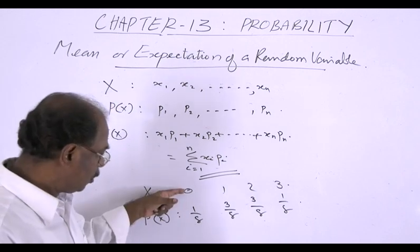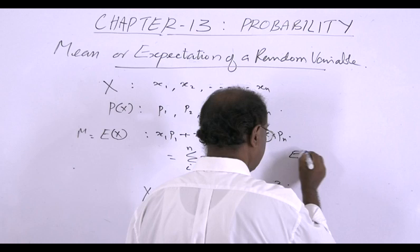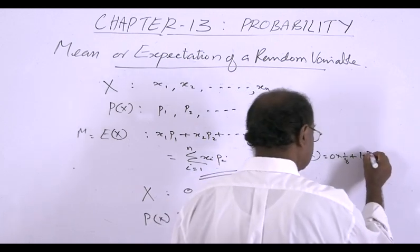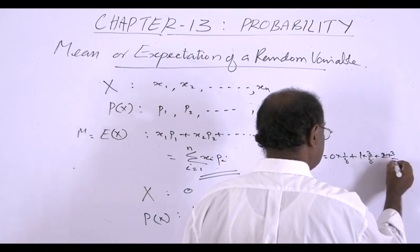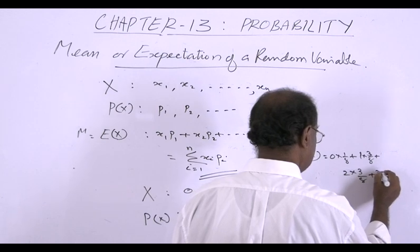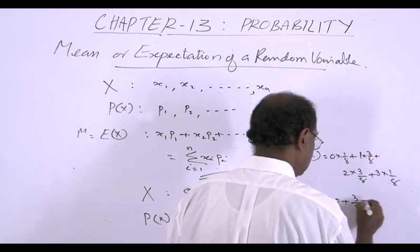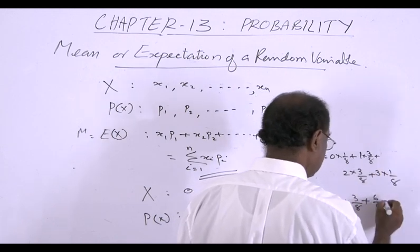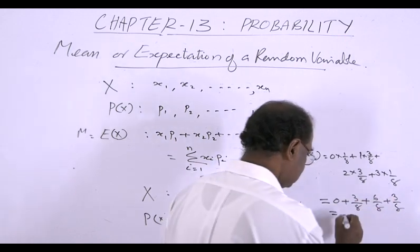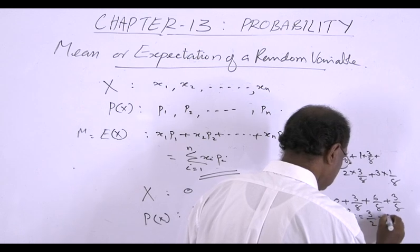The expectation is 0×(1/8) plus 1×(3/8) plus 2×(3/8) plus 3×(1/8), which equals 0 plus 3/8 plus 6/8 plus 3/8, giving 12/8, which equals 3/2, or 1.5.